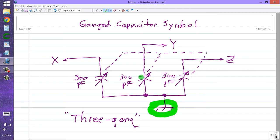But when you see this with air variable capacitors, it means that they are ganged.